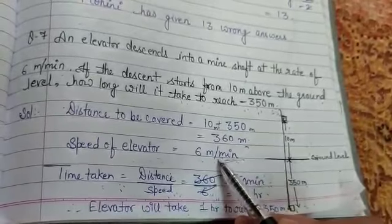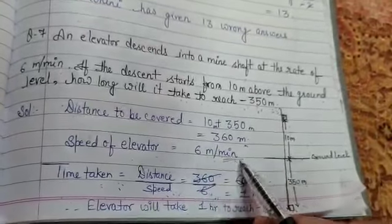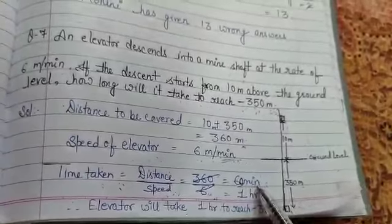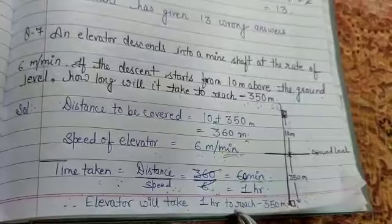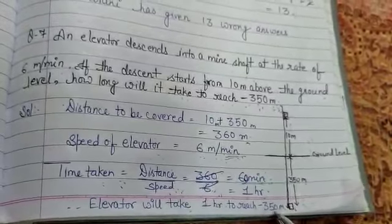Why minutes? Because its speed is given in minutes only, 6 meters per minute. So 60 minutes means 1 hour. So the elevator will take 1 hour to reach minus 350 meters.